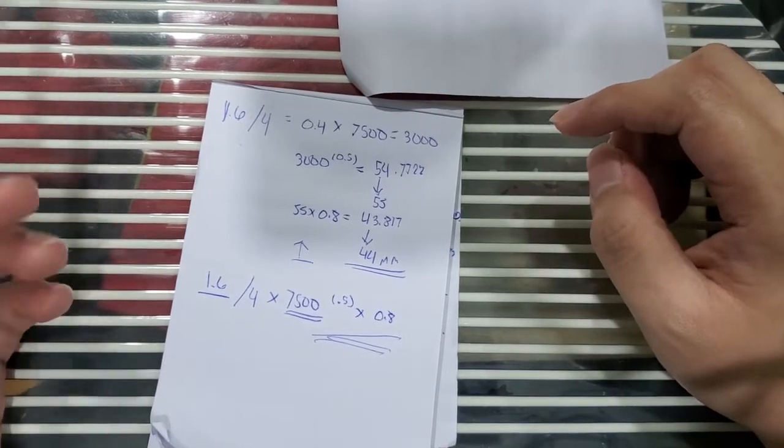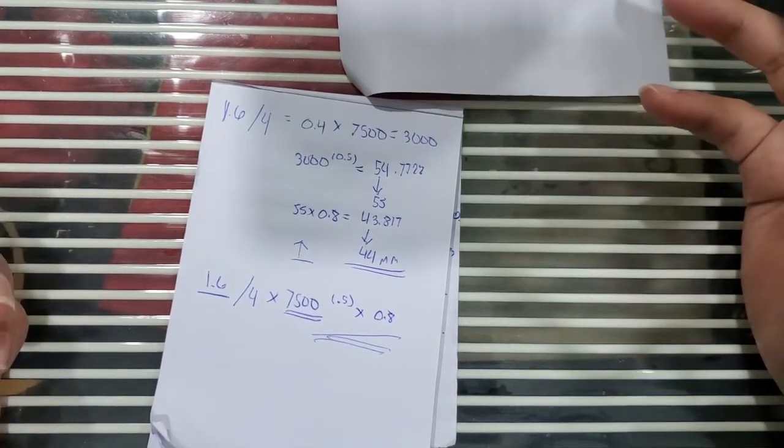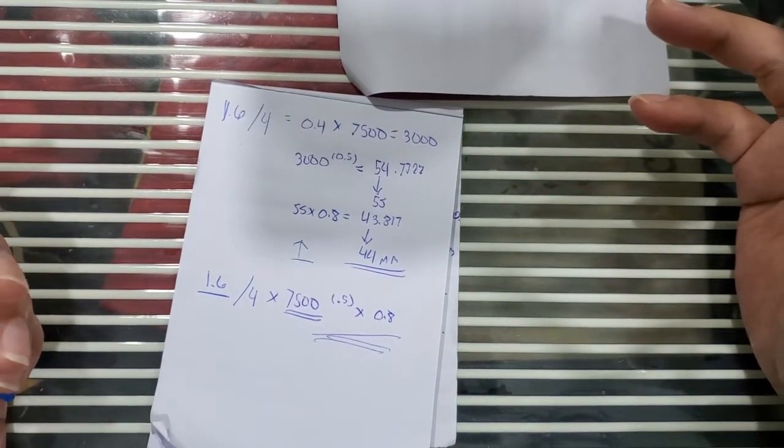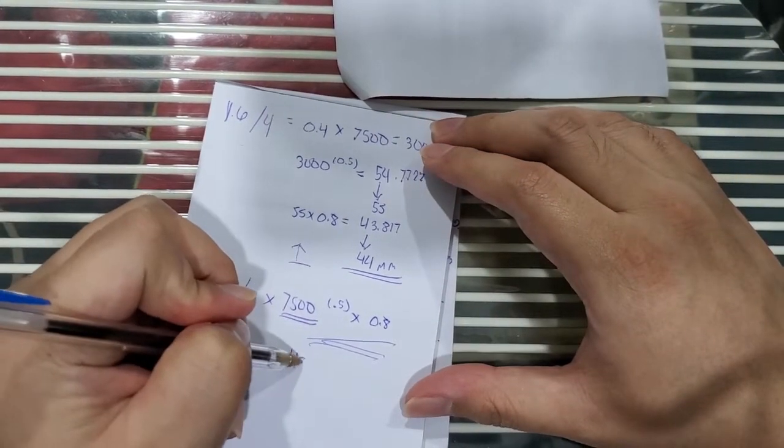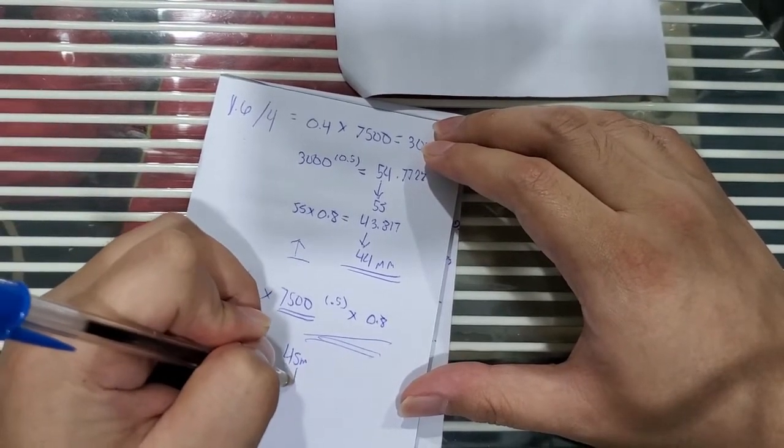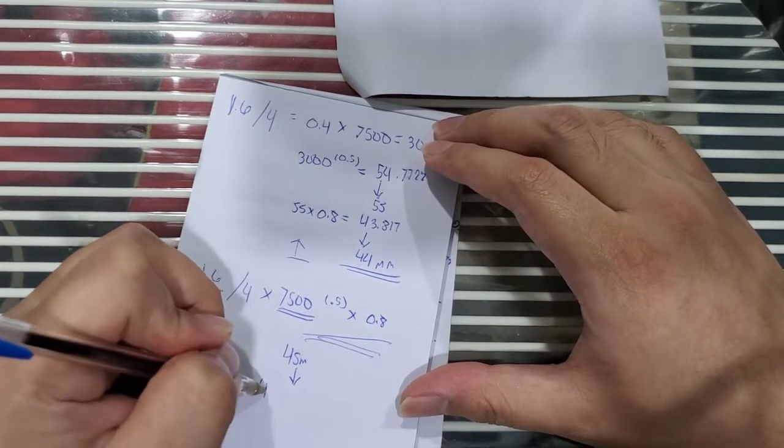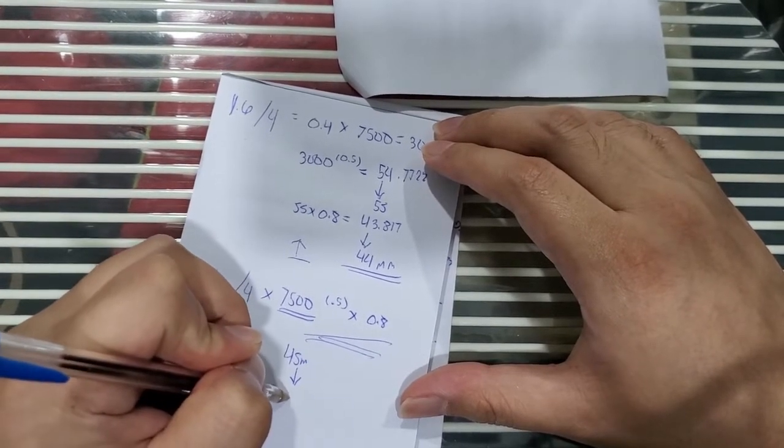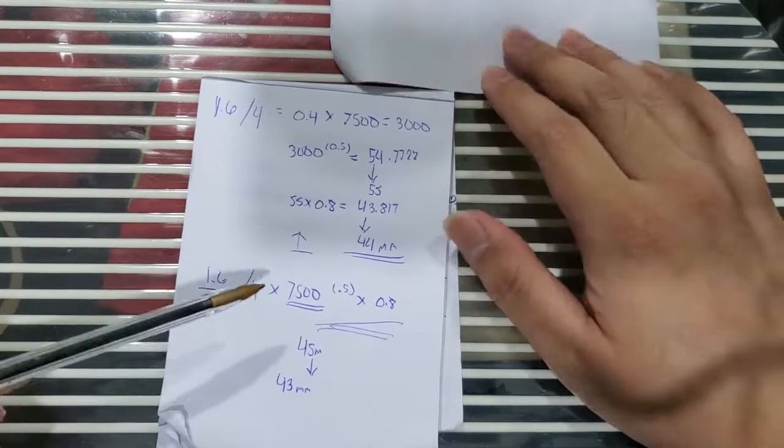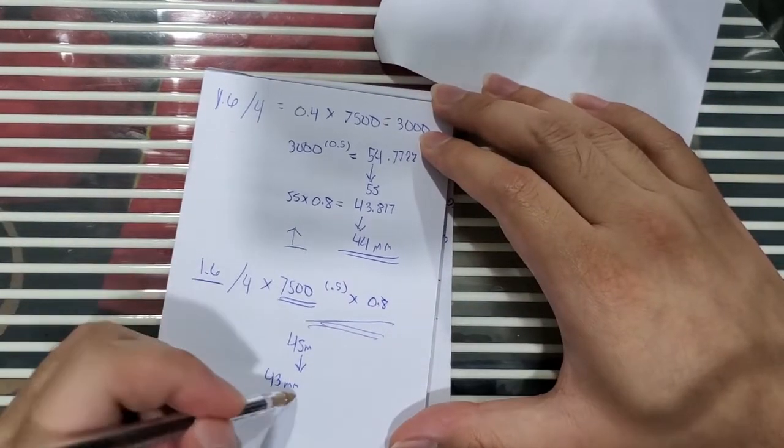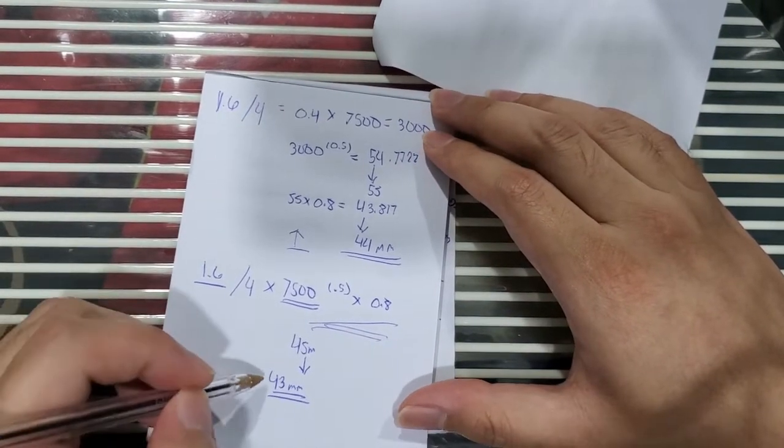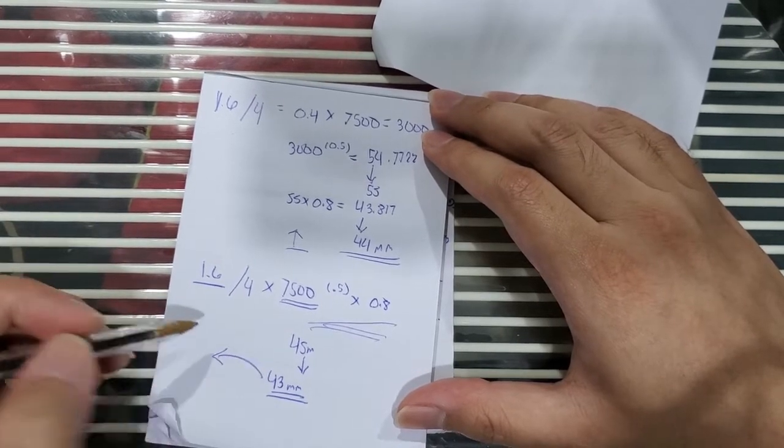What if you were using your engine for day-to-day use and you have, let's say, a 45 millimeter throttle body, and what you would actually be needing was only a 43 to accomplish the job?